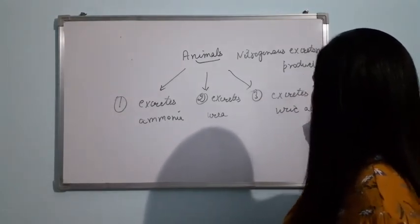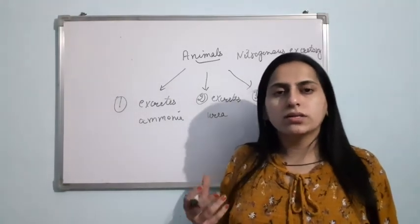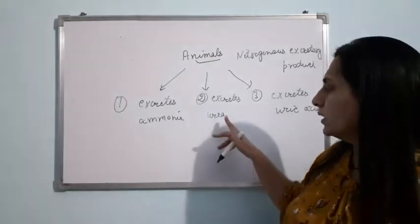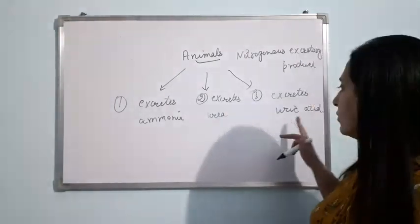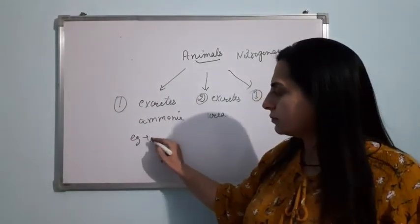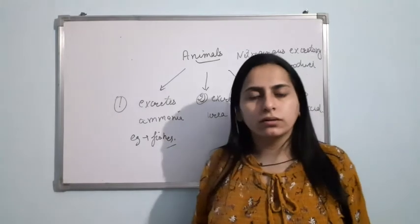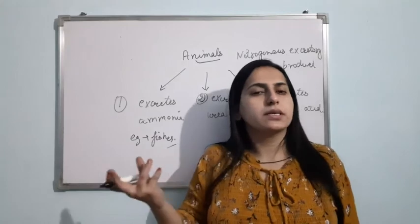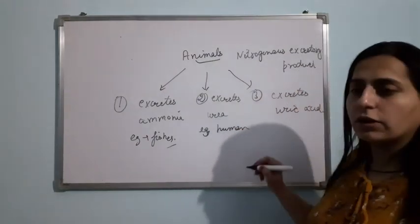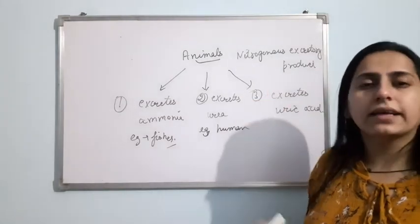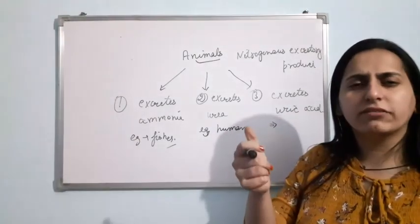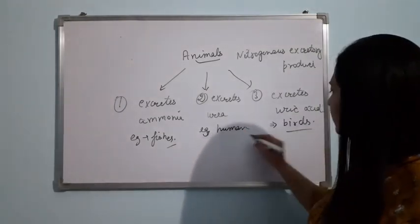Basically it depends upon the availability of water. If the availability of water is more, then ammonia will be excreted. If the availability of water is moderate, then urea will be excreted. And if the availability of water is quite less, then uric acid will be excreted. For example, fishes live in water — they have adequate supply of water, so their excretory product is ammonia. Human beings have a moderate amount of water, so we excrete urea. Birds fly in the sky and have a shortage of water, so they excrete uric acid, which is a semi-solid waste.